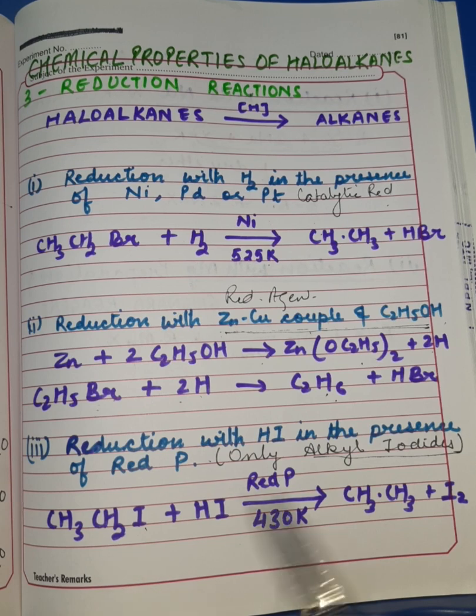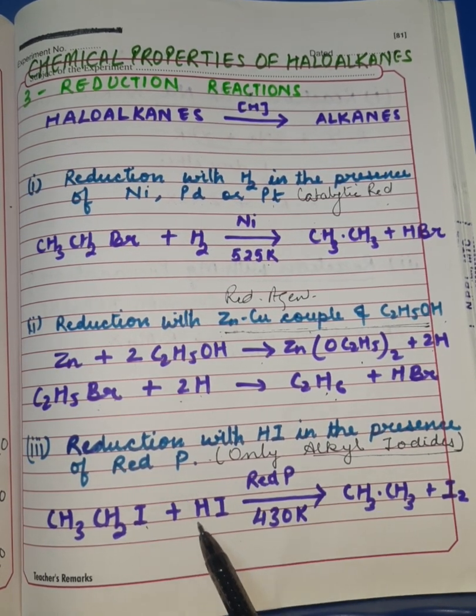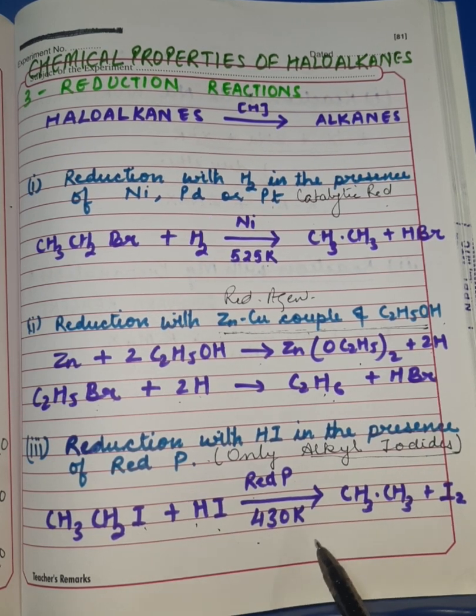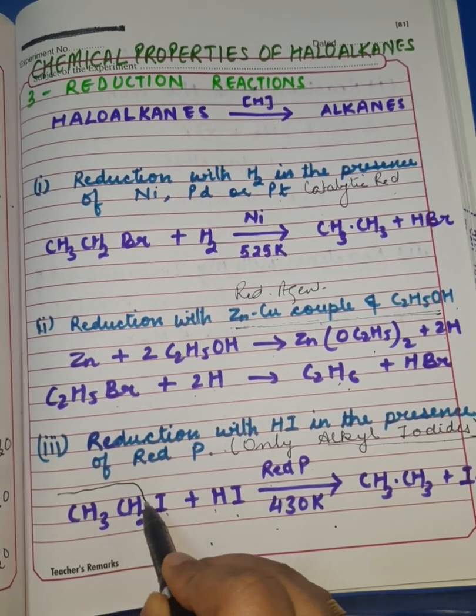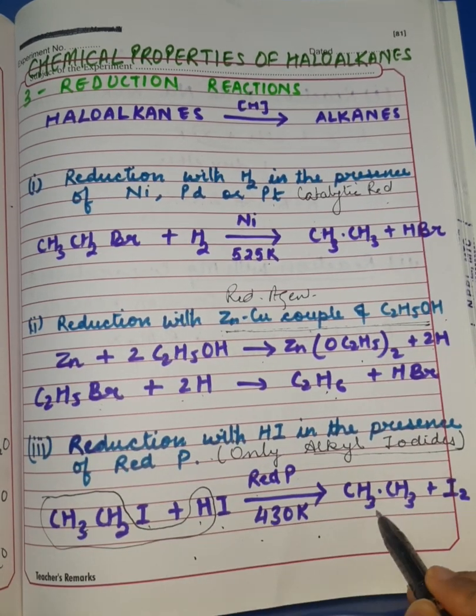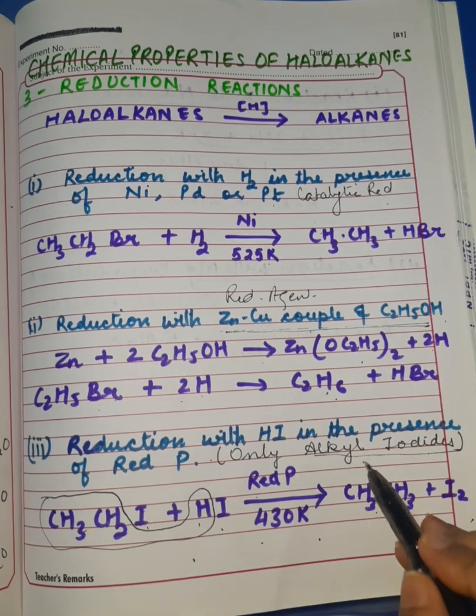In this reaction, I have written here ethyl iodide. You can make use of any other alkyl iodide, reacting it with HI, hydrogen iodide, in the presence of red phosphorus at the temperature 430 Kelvin, where the reduction takes place such that CH₃CH₂I becomes the respective alkane with the liberation of iodine gas. It's a specific reaction.